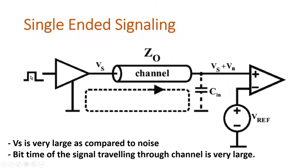Now consider the case where bit time is very small. If transmitting a one, the one remains for a very short time, so the capacitor starts charging but cannot reach a sufficient value. The receiver may then detect it as zero because it won't get sufficient voltage at its input. Similarly, if transmitting a zero with very small bit time, the capacitor starts discharging but may not discharge fully, so the receiver may detect it as one. This theory is the basis for understanding differential signaling.